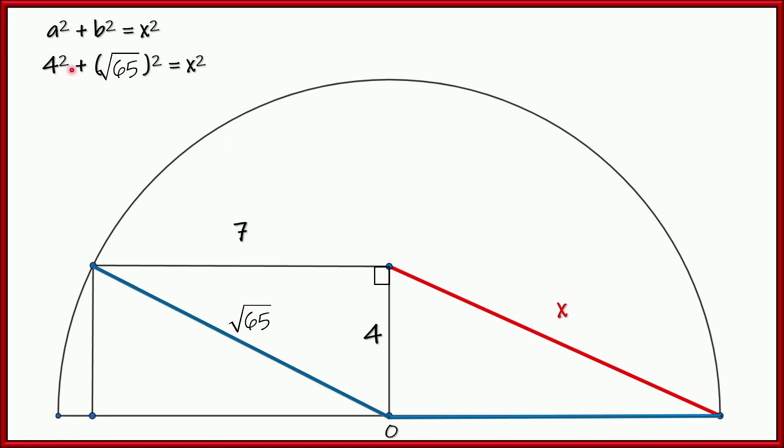Now 4 squared, that's 16. The square root of 65 squared. Well, that's just plain old 65. All right? Adding these together, 65 and 16 make 81 equals x squared. Well, since 9 times itself is 81, x equals 9.